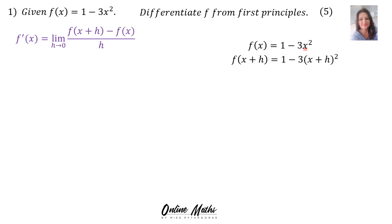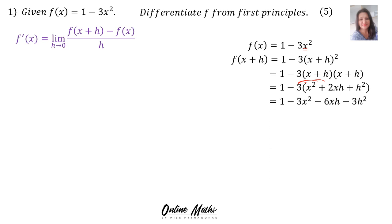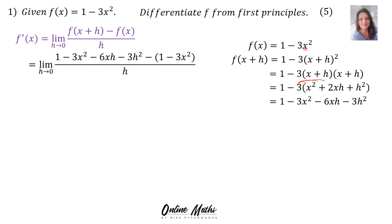We will deal with x plus h first by writing it as two brackets, foiling it out. And then in this step I will multiply in the negative 3, and it becomes 1 minus 3x squared minus 6xh minus 3h squared. Back into our formula, the limit h tends to 0 — everything I wrote there was f(x plus h). Then there's the minus, and the function as it was given to you: minus bracket 1 minus 3x squared.